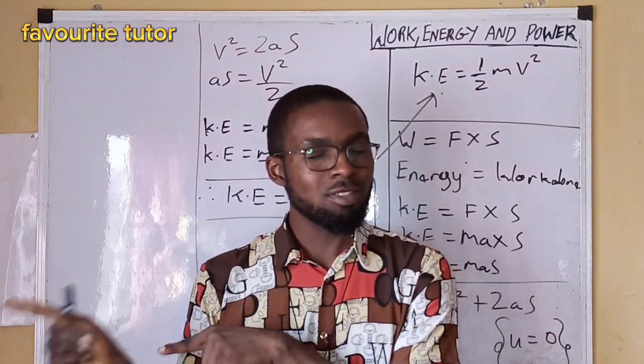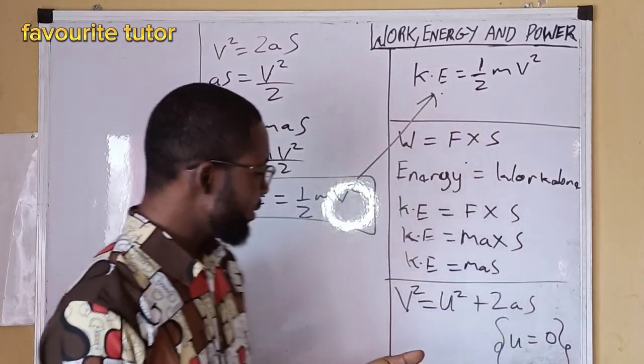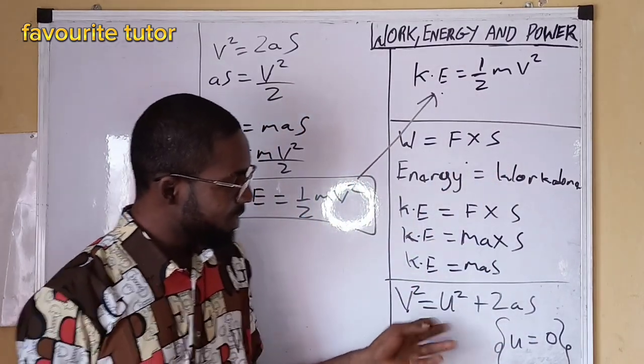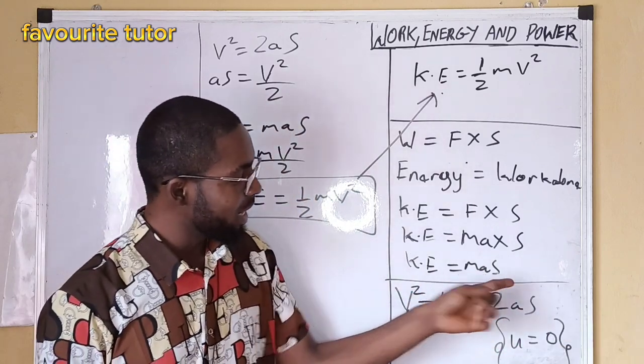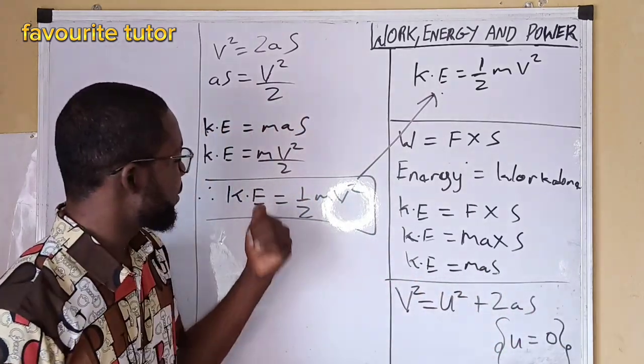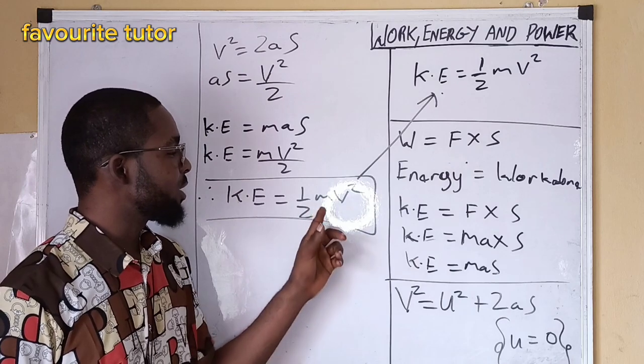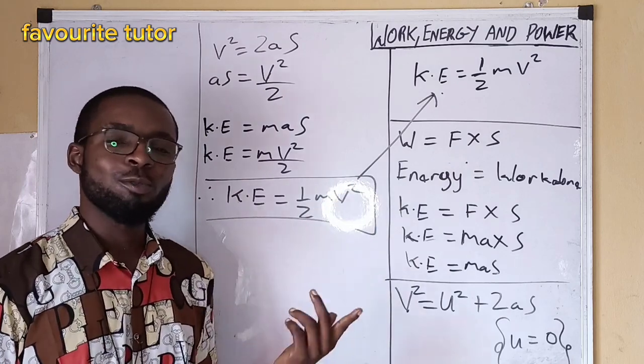We may not forget the equation of motion. So we substitute for a s and then we have kinetic energy, 1 over 2 mV squared.